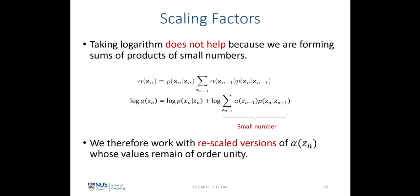Taking logarithms does not help, because we are forming a sum of products of small numbers. If we take the log of the alpha values, although we resolve some terms, there is still a product term inside the log due to the summation term, which we cannot push the logarithm through to break apart. So this will still be a small number, and we cannot resolve the underflow problem using logarithm. We therefore introduce a scaled version of the alpha algorithm whose value will remain of order unity.